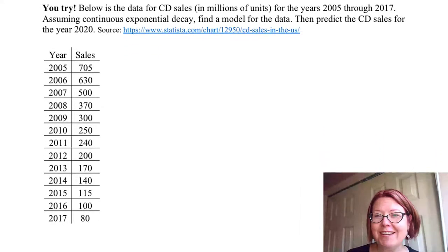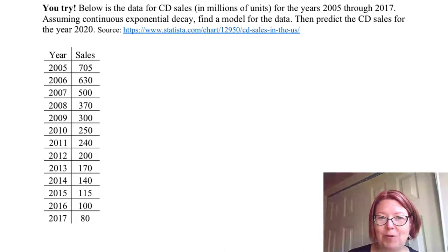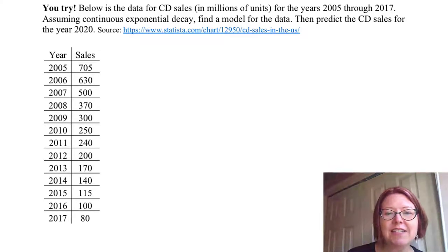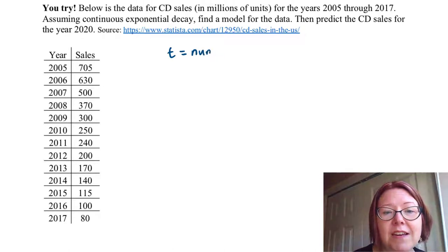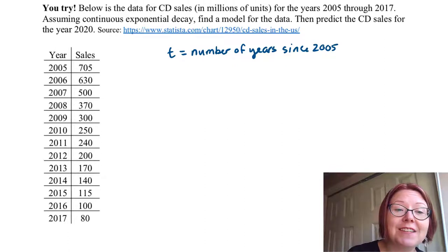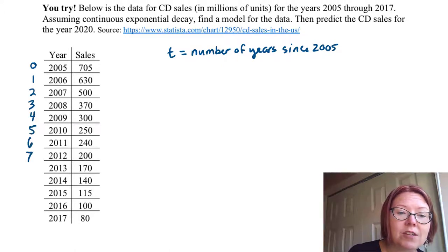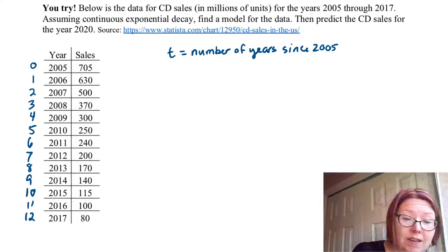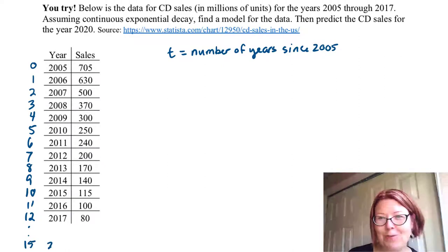I'm going to read you the data, so if you're putting your data into Desmos as we speak, you can get it from this. Let's go ahead and agree on a t value for the index. Let's let lowercase t be the number of years since 2005. So 2005 is year 0, 2006 is year 1, 2, 3, 4, etc., going all the way up to 2017 being year 12 and 2020 being year 15.